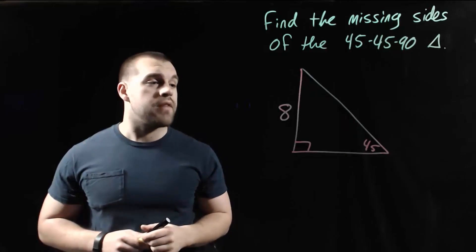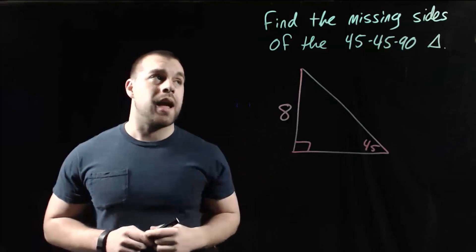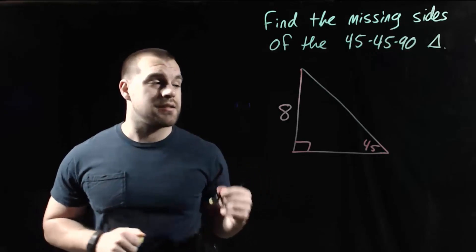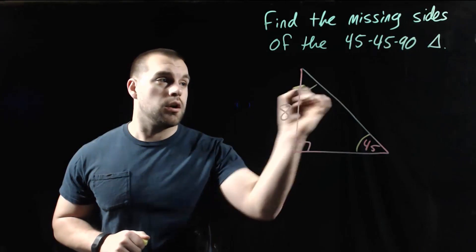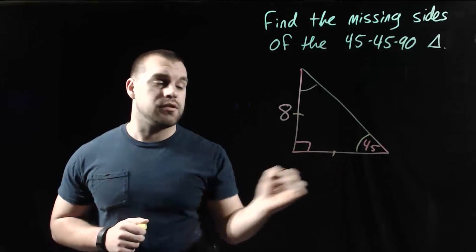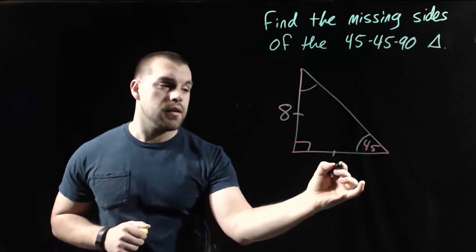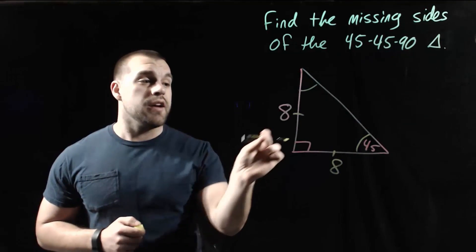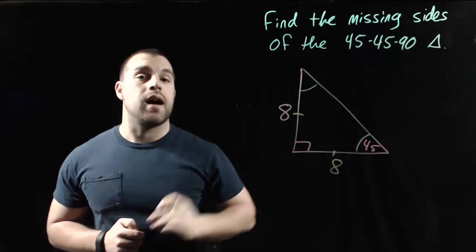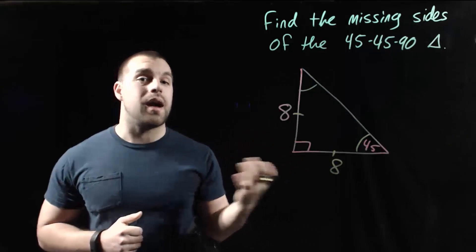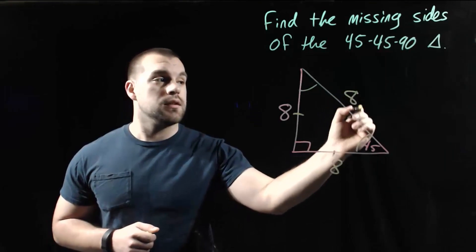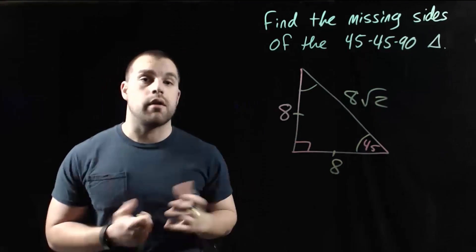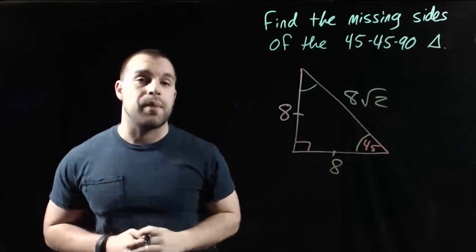In this example, we're given a 45-45-90 triangle with one of the legs as 8, and we want to find the missing sides. Since it's an isosceles triangle, the two 45-degree angles are congruent, so the two legs must be congruent. If this leg is 8, the other leg also has to be 8. To find the hypotenuse, we take the leg times the square root of 2: 8 times root 2 gives us 8 root 2. There's no simplifying we can do there, so the missing leg is 8 and the missing hypotenuse is 8 root 2.